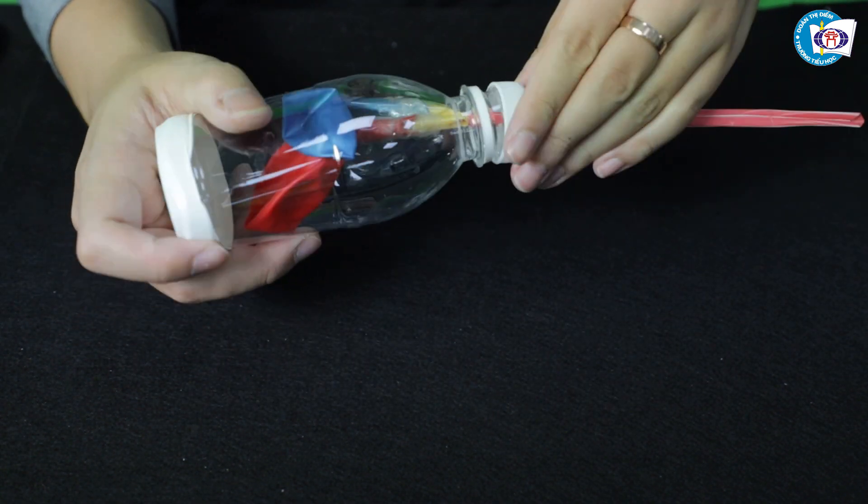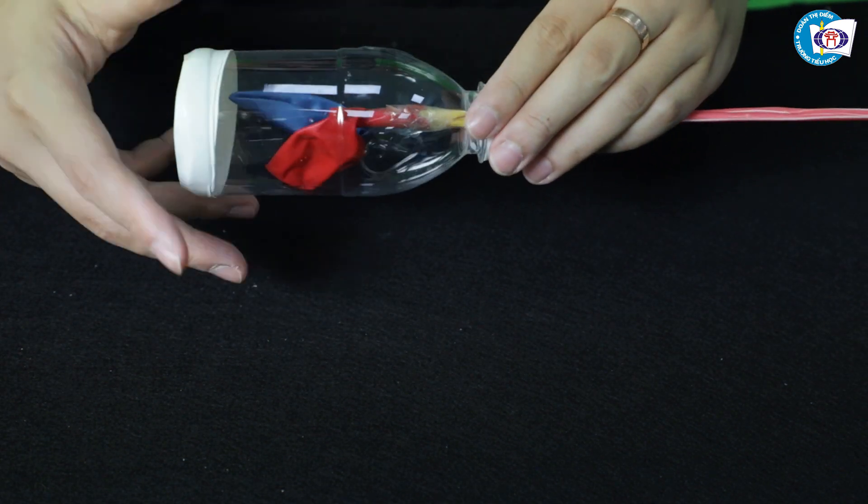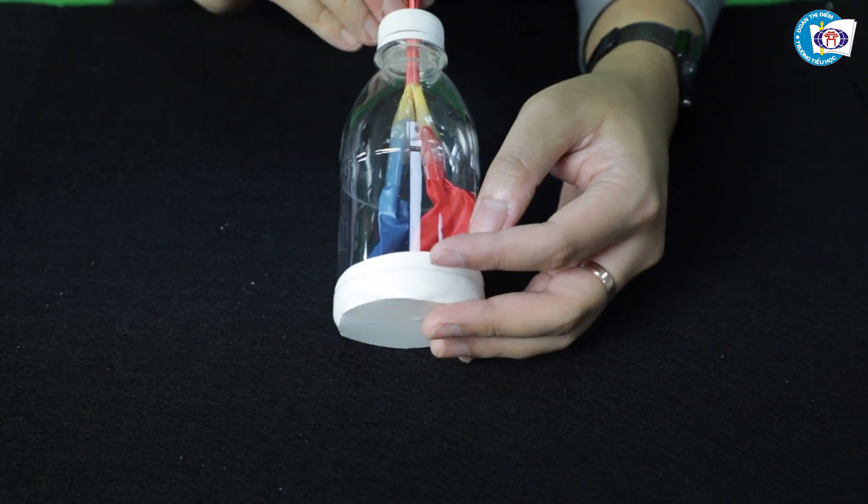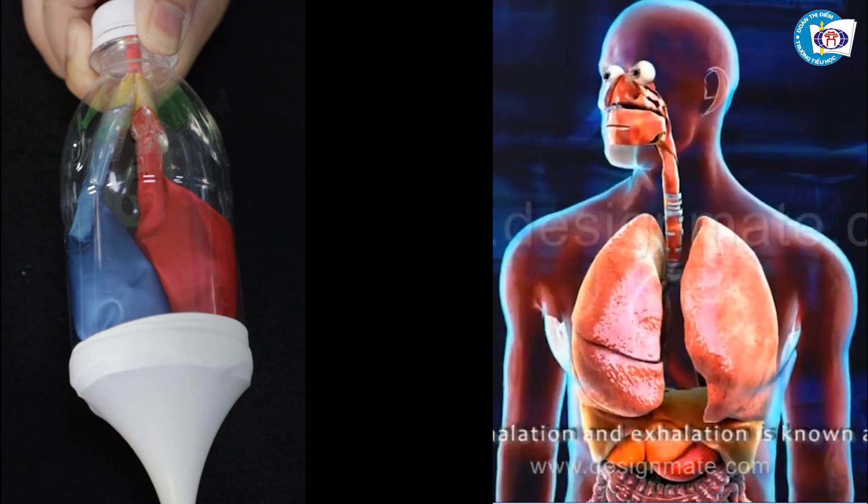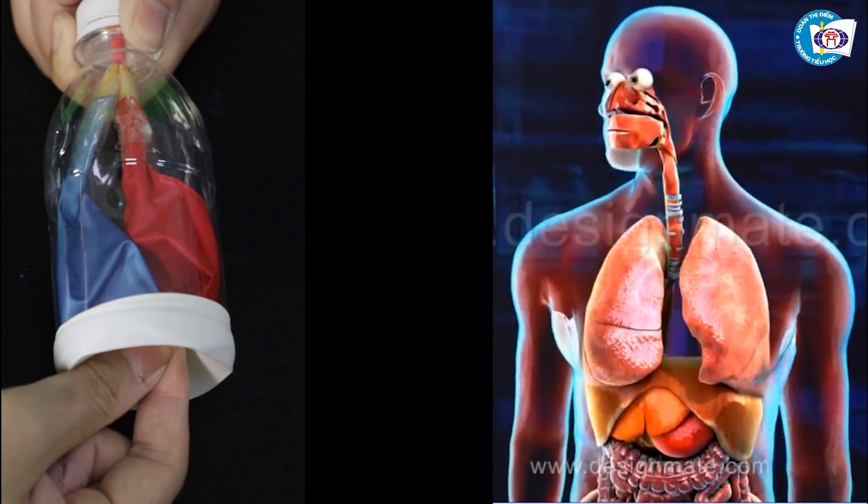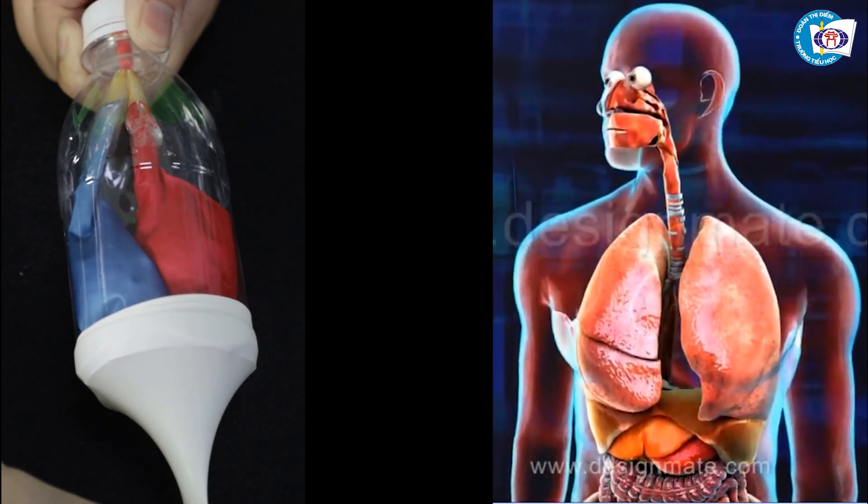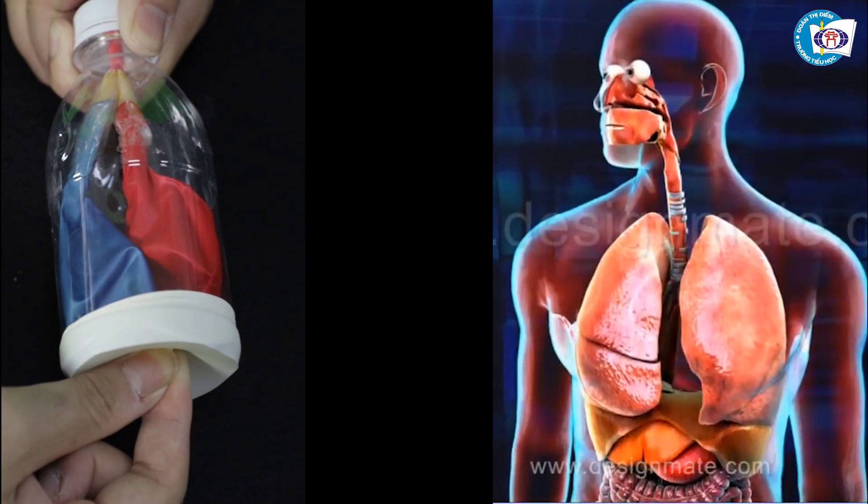When we breathe in, the diaphragm goes down, the lungs get bigger and let air with oxygen in. When we breathe out, the diaphragm goes up, the lungs get smaller and pushes air with carbon dioxide out.